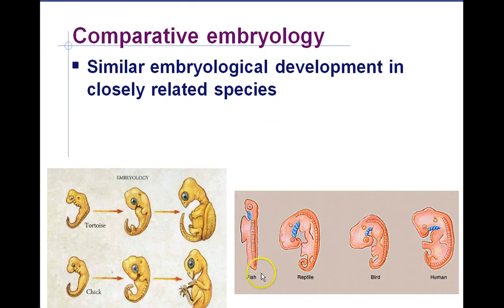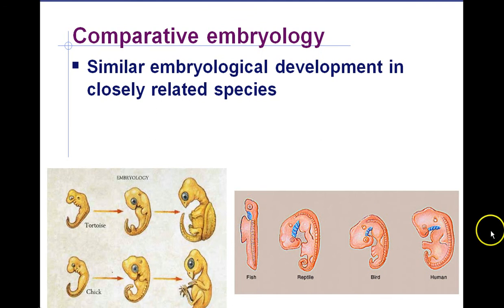Comparative embryology. Animals that have a similar common ancestor also have similar developmental patterns. They modify the structures that develop during embryological development over time as a result of mutations unique to those species. For example, fish, reptiles, birds, and humans all have fish ancestors, and fish have gill pouches. Mutations in reptiles, birds, and humans have converted that gill pouch into other structures like the lower jaw and inner ear. We all form these same structures at early stages of development because of shared common ancestry.